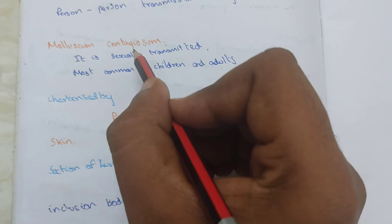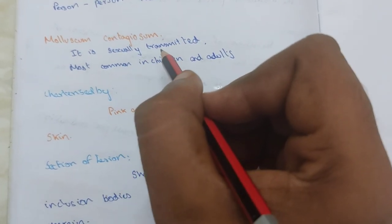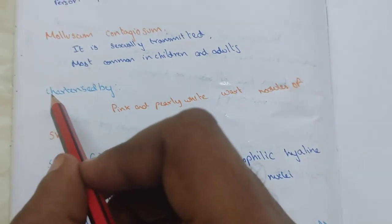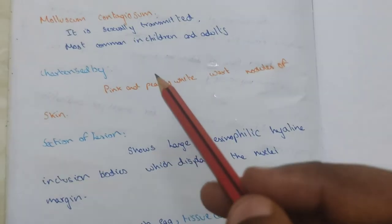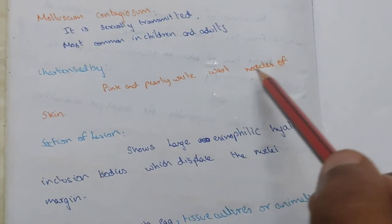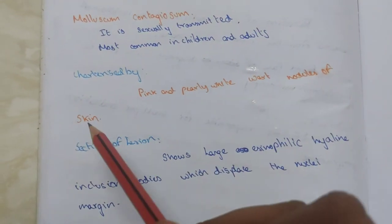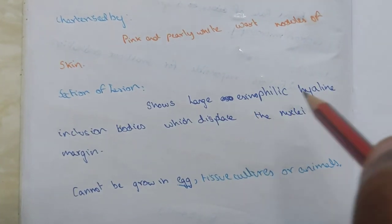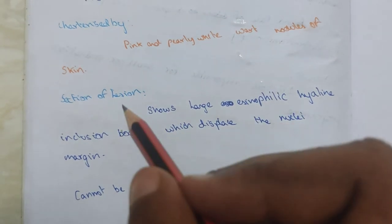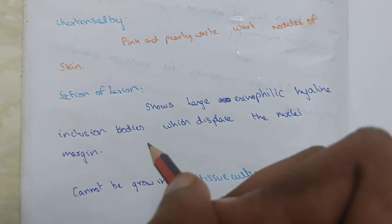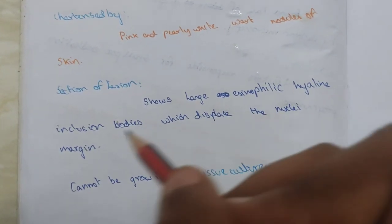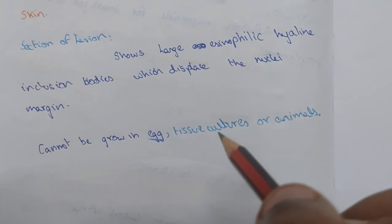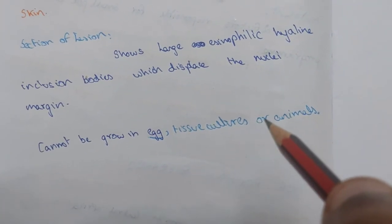Molluscum contagiosum is sexually transmitted and is most common in children. It is characterized by pink and pearly white waxy nodules of the skin. Sections of the lesion show large eosinophilic hyaline inclusion bodies which displace the nuclei to the margin. It cannot be grown in egg, tissue culture, or animal models.